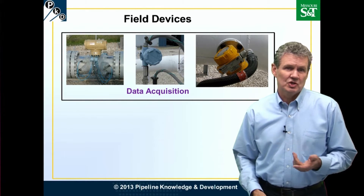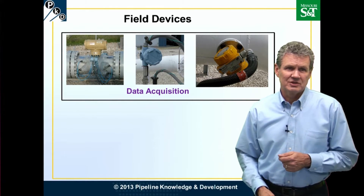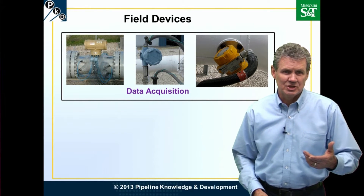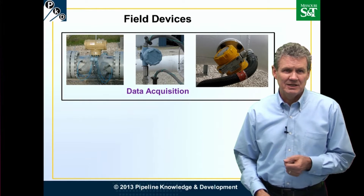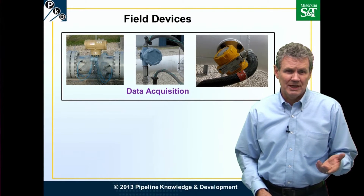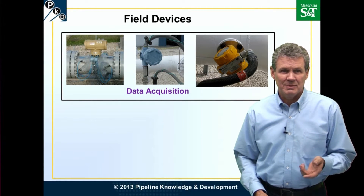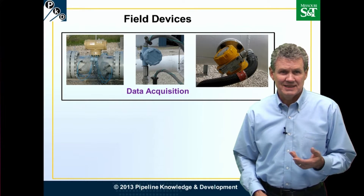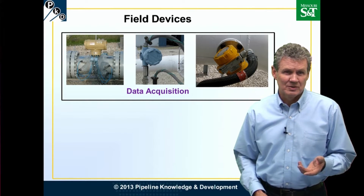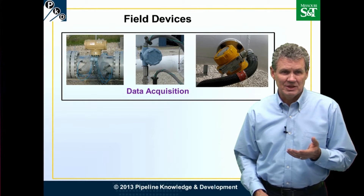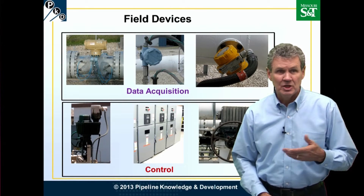Field devices are instrumentation located in the field. Going from left to right: an ultrasonic meter, a pressure transmitter, a density detector. These are devices that are gathering information, acquiring data.